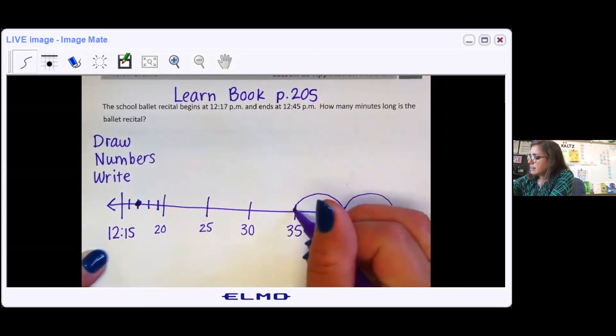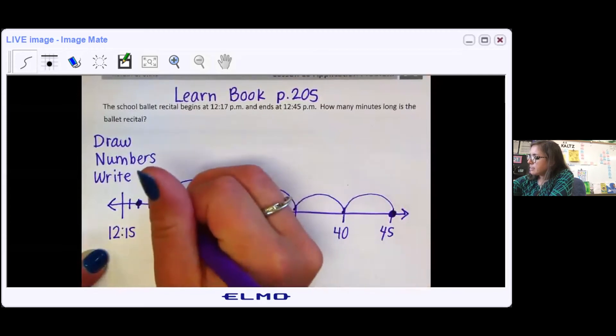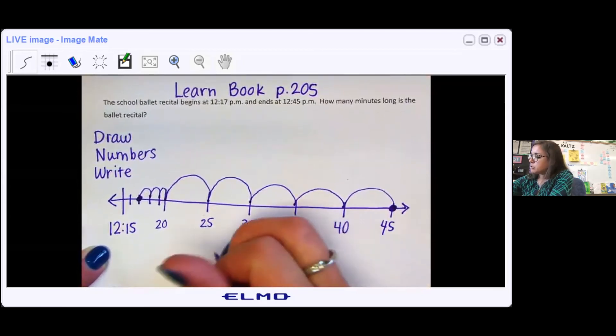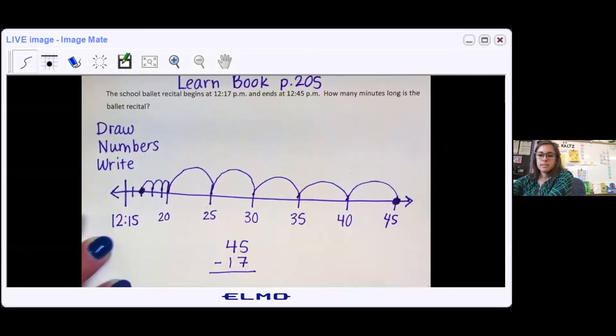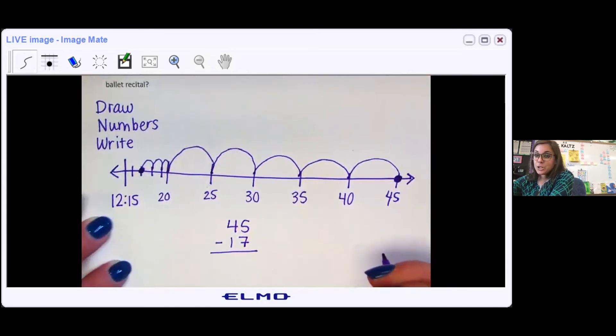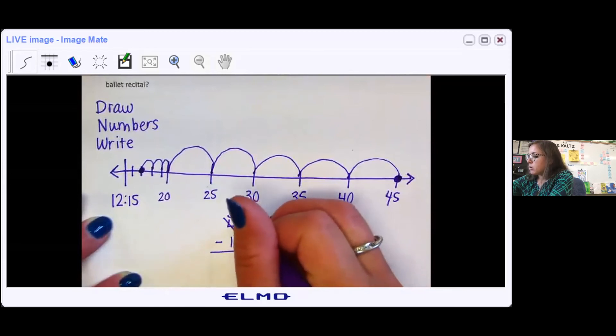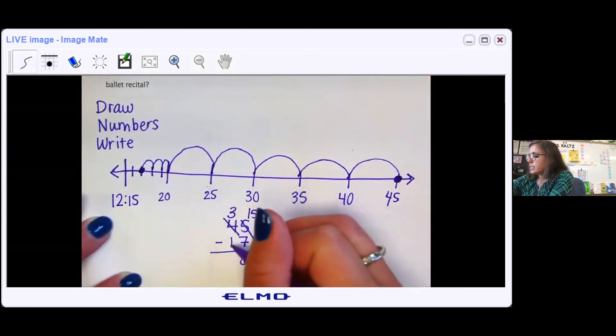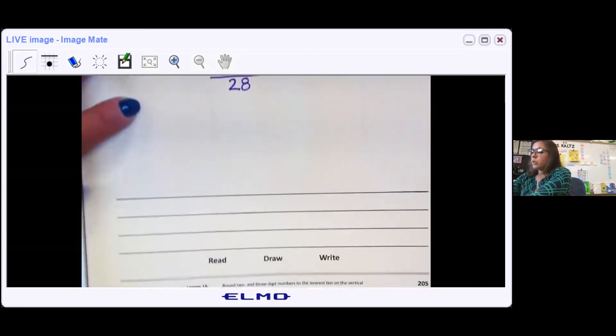5, 10, 15, 20, 25, 26, 27, 28. So the ballet recital was 28 minutes long. You could have also simply subtracted the minutes. 45 minutes take away 17 minutes. 5 take away 7, it's not 2. You cannot do that. We need to decompose 40 into 30 and then 10 more over here. So 5 becomes 15. 15 take away 7 is 8. 30 take away 10 is 20.